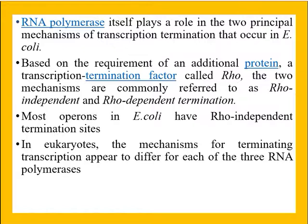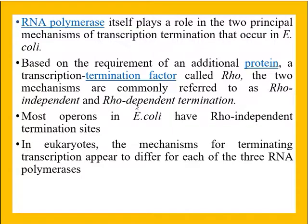Termination is how this process ends — how the newly synthesized mRNA is freed from the DNA template. This is carried out by the RNA polymerase enzyme itself, which plays a role in the two principal mechanisms of transcription termination, extensively studied in E. coli. This classification is based on the requirement of an additional protein — a transcription factor called rho, or termination factor. Some transcription processes require this rho protein for termination and are called rho-dependent, while others independent of rho are called rho-independent termination.